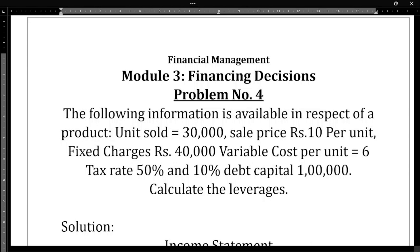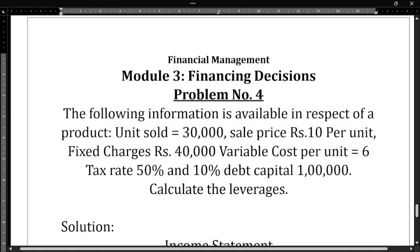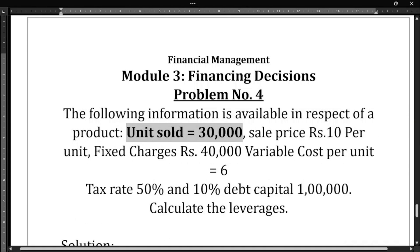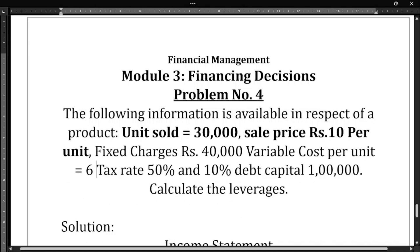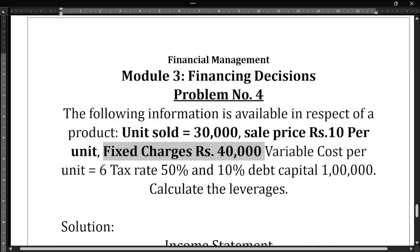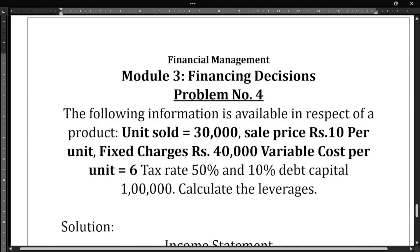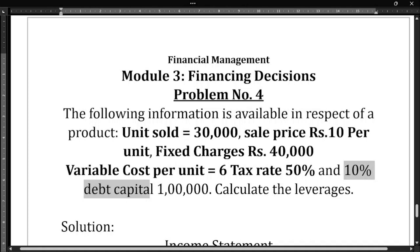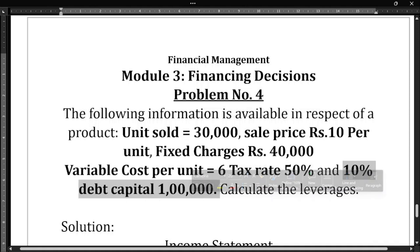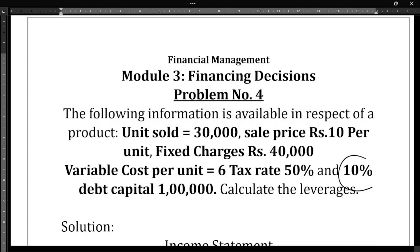The following information is available in respect of a product: total units sold is 30,000 units; sale price is ₹10 per unit; variable cost per unit is ₹6; tax rate is 50%; and there is 10% debt capital of ₹1 lakh, on which we need to pay 10% interest.